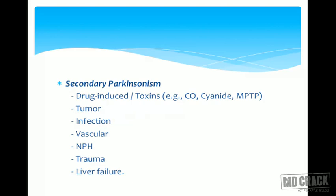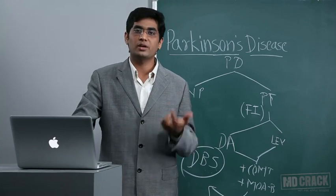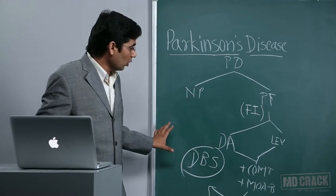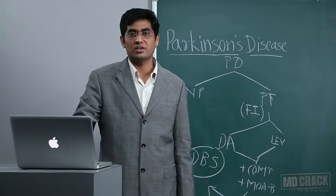Secondary parkinsonism: causes include drugs, carbon monoxide, cyanide, and MPTP. Other causes are tumors, infection, vascular causes, normal pressure hydrocephalus (NPH), trauma, and liver failure. To summarize: we discussed Parkinson's disease, atypical parkinsonism, secondary parkinsonism, the general treatment approach, the role of levodopa, dopamine agonists, and deep brain stimulation.